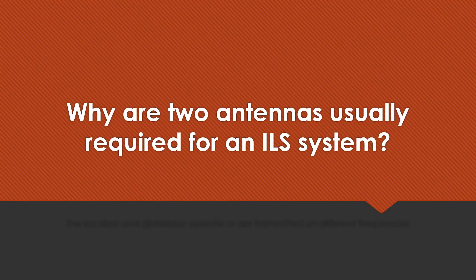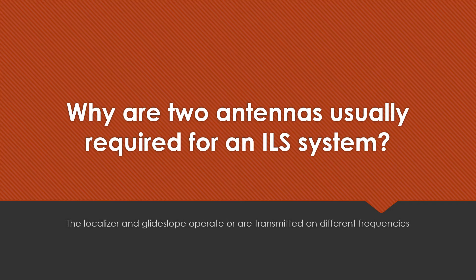Why are two antennas usually required for an ILS system? The localizer and glide slope operate, or are transmitted on, different frequencies.